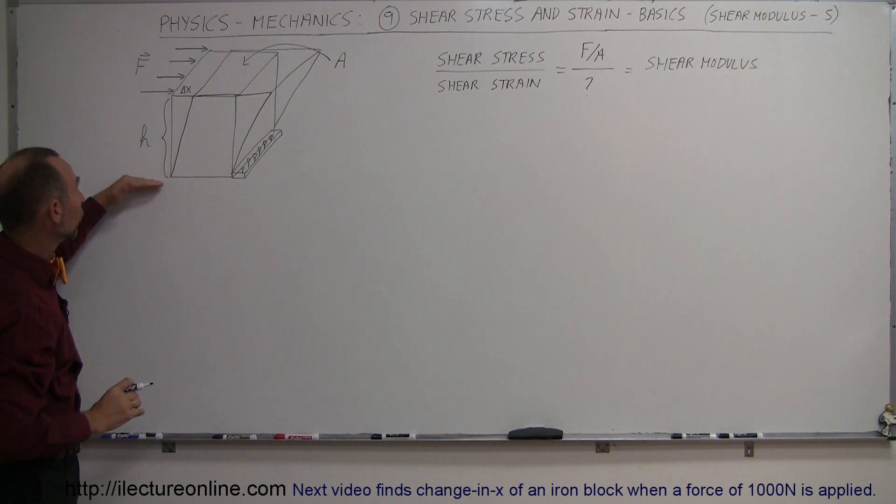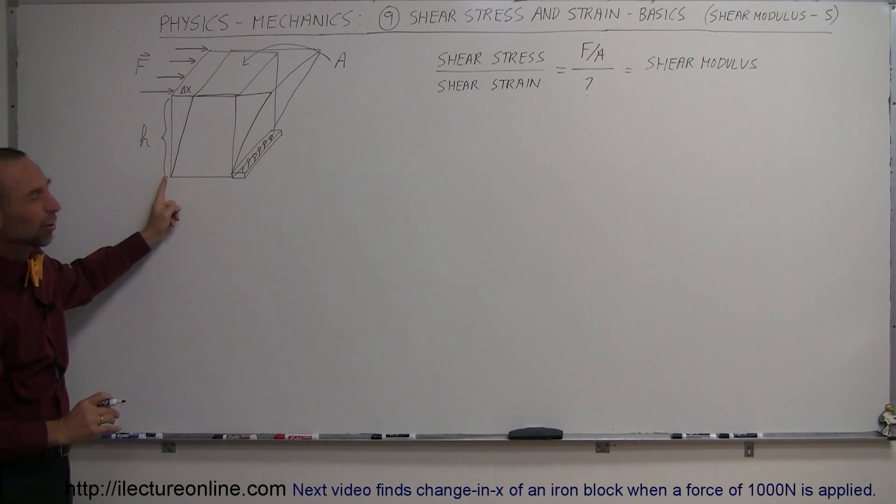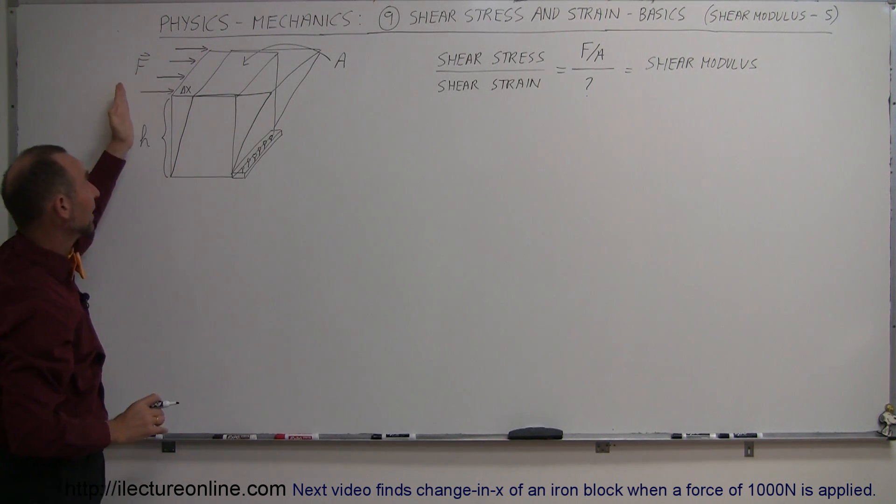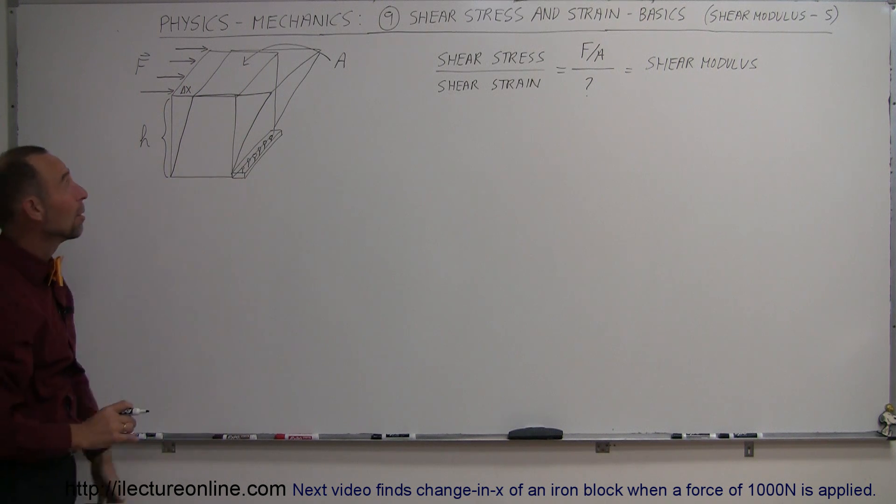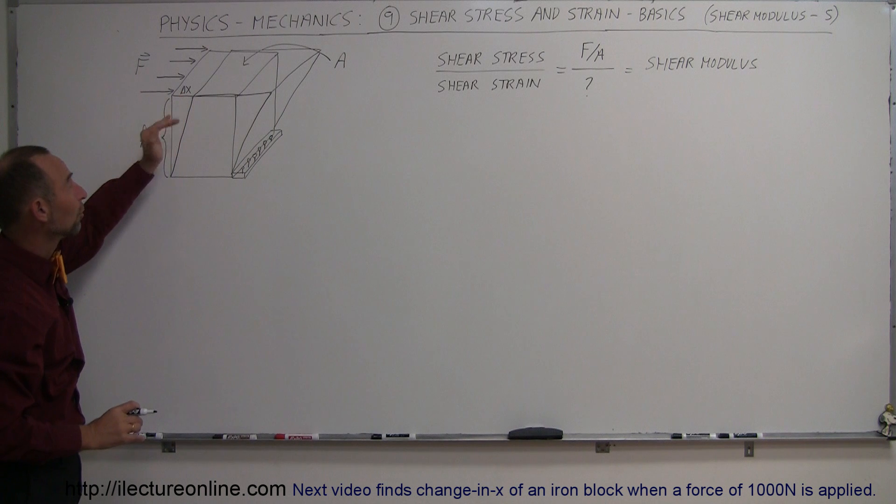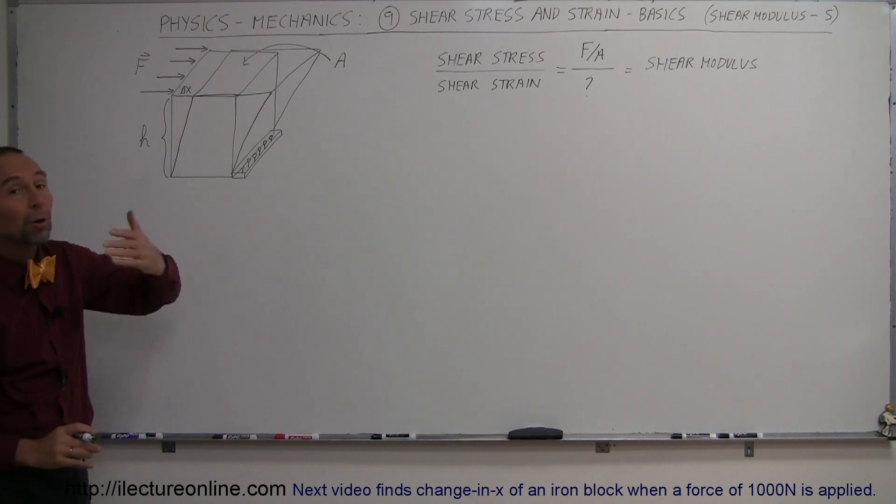It does depend upon the height, h. If this height is very small, then delta x will probably be very small as well. If h is very large, then delta x can be proportionally much larger as well. The amount that the material deforms will depend upon what we call the shear modulus, which is the strength of the material in this particular fashion.